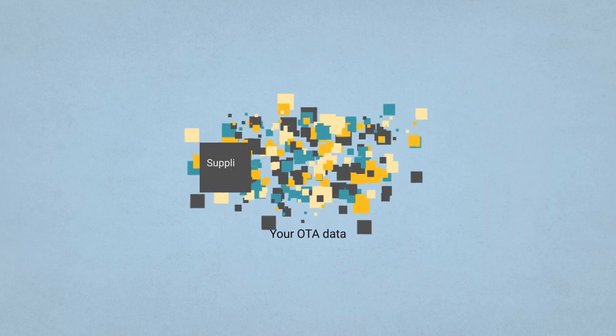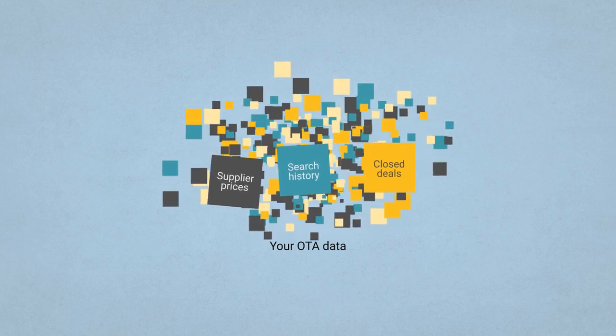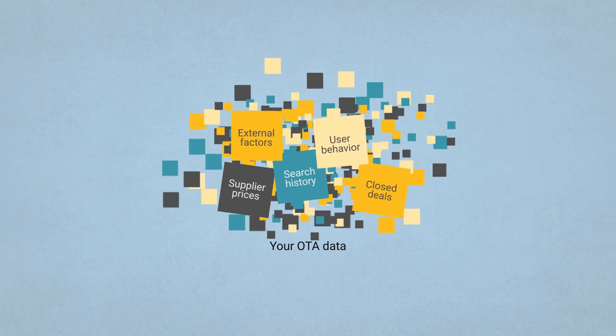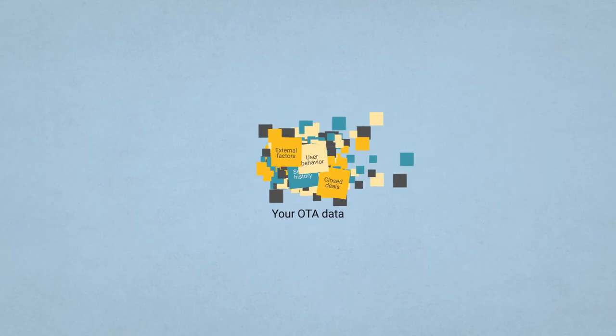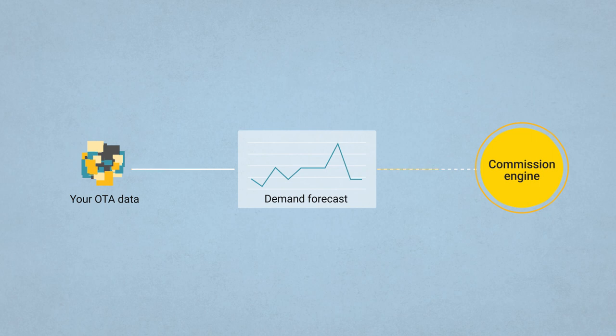But this is still not enough – can we make the engine even better? Your OTA can generate a lot of data: you get prices and their changes from suppliers, you have search history by destinations, a track record of all closed deals, and user behavior data. On top of that, you can consider external factors like weather or local events at destinations. Once you start generating a lot of data, you can use it to start predicting things. Machine learning can help you forecast when demand will rise or fall, then adjust your rules to take advantage of those changes. Or you can try predicting the commission sizes themselves that are competitive but generate enough revenue.